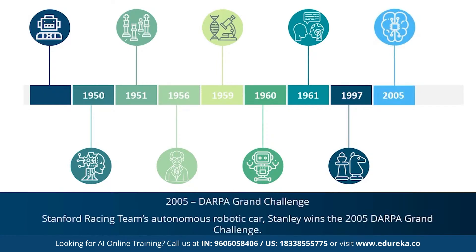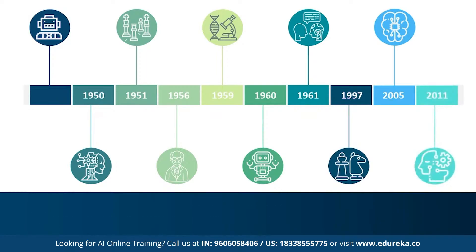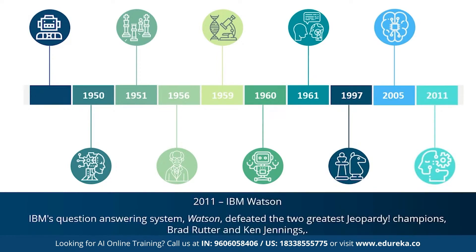2005 marks the year when an autonomous robotic car called Stanley won the DARPA Grand Challenge. In 2011, IBM's question answering machine Watson defeated the two greatest Jeopardy champions, Brad Rutter and Ken Jennings. Since the emergence of AI in the 1950s, we've seen exponential growth in its potential. AI now covers domains such as machine learning, deep learning, neural networks, natural language processing, knowledge base, and expert systems.